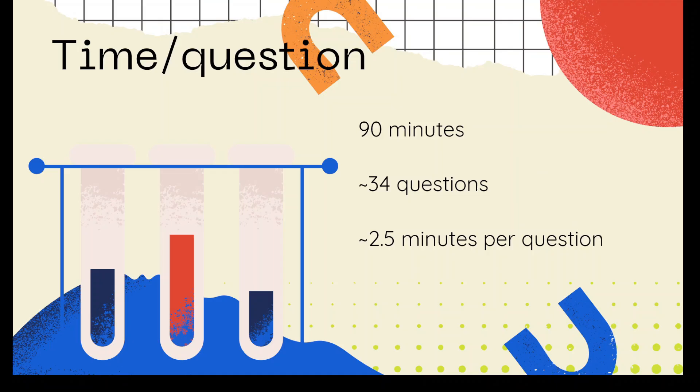So there's 90 minutes for the science GED test and about 34 questions. So that leaves you about two and a half minutes per question if you want to think about your timing.